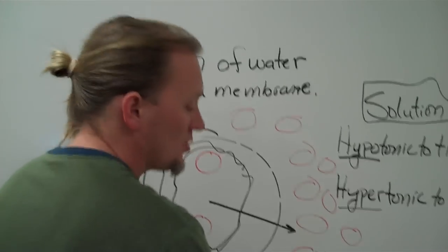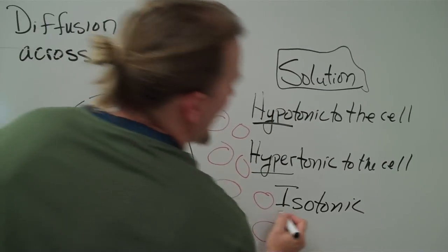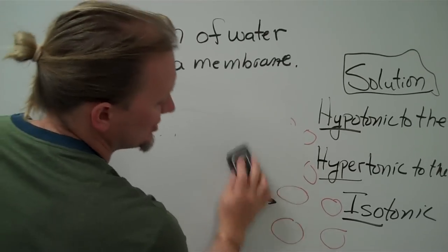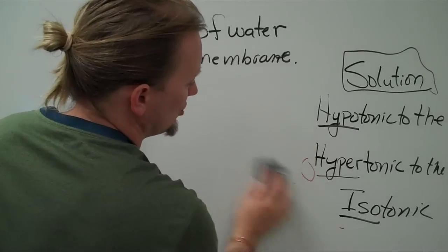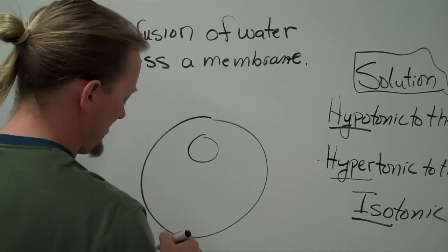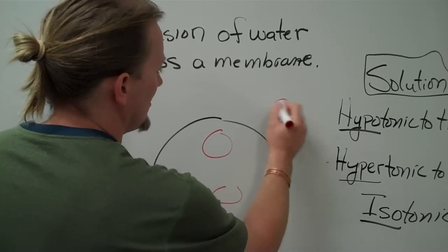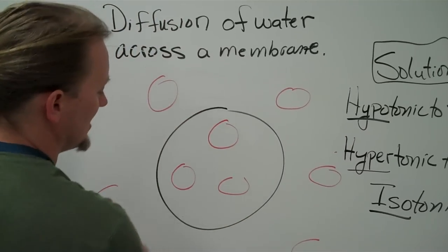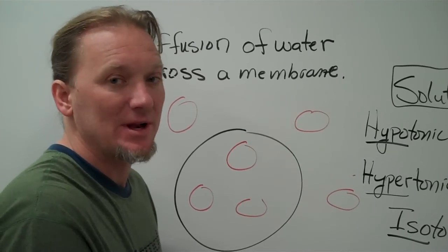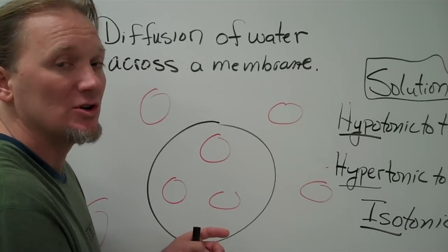The third class is, of course, isotonic. When you're isotonic to the cell, it means you're exactly the same. In an isotonic scenario, where the solution is isotonic to the cell, you're going to have exactly the same concentration of ions on the inside as on the outside. The water will not really go in or out in any predominant direction — it can move in and out, but it doesn't change the concentration — so the cell neither shrinks nor expands.